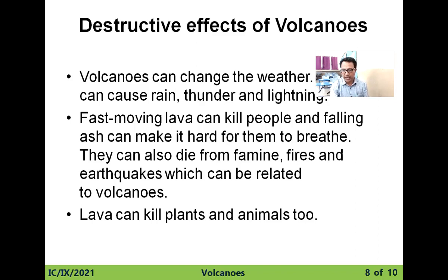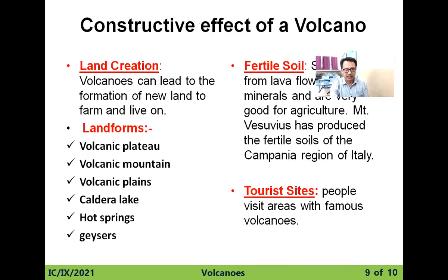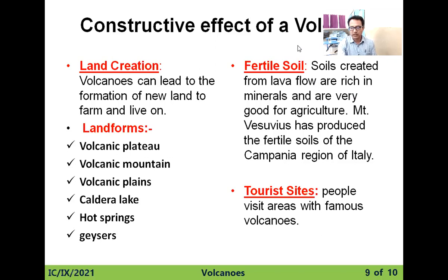Lava can kill plants and animals too. Now let's see the constructive effects of volcanoes. Land creation: the volcano can lead to the formation of new land to farm and live on. The land forms include volcanic plateaus, volcanic mountains, volcanic plains, caldera lakes, hot springs, and geysers. Fertile soil: soils created from lava flow are rich in minerals and are very good for agriculture. Mount Vesuvius has produced the fertile soils of the Campania region of Italy. Tourist sites: people visit areas with famous volcanoes.